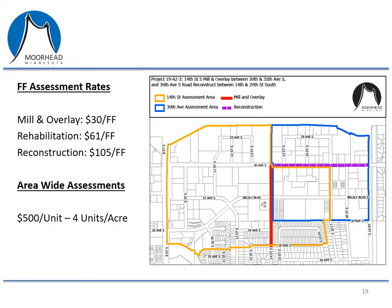This slide includes information on the assessment rates. We have two categories: front footage special assessment rates and the area-wide assessment rate. The front footage assessment is levied against properties next to the road that has the project, and the rate depends on the type of work being done. If the city is doing a mill and overlay, it's $30 a front foot; if it's a rehab, it's $61 a front foot; and if it's a reconstruction, it's $105 a front foot. The focus for this project is on the mill and overlay rate, which applies to 14th Street, and the reconstruction rate, which applies to properties on 30th Avenue South. The area-wide assessment is a flat $500 for residential properties, and for commercial properties it's $500 per quarter acre of property. I'll go through a couple of examples on the following slides.